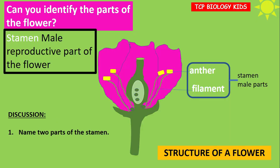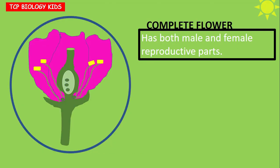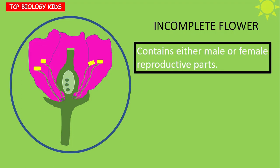The stamen represents the male reproductive part of a flower — it contains both the anther and filament. The pistil is the female reproductive part of the flower. A complete flower is one that has both male and female reproductive parts. An incomplete flower contains either male or female reproductive parts only.